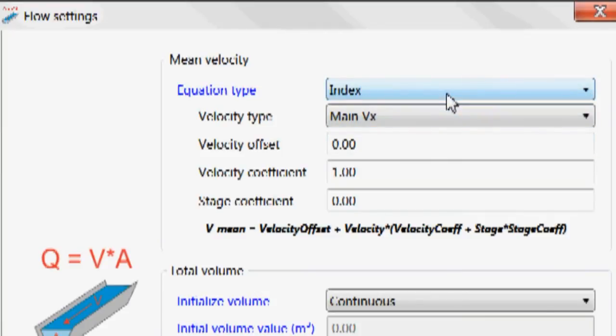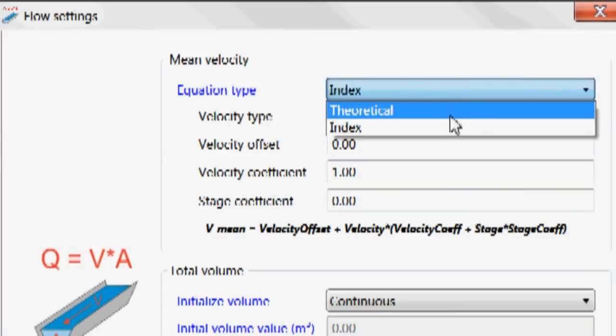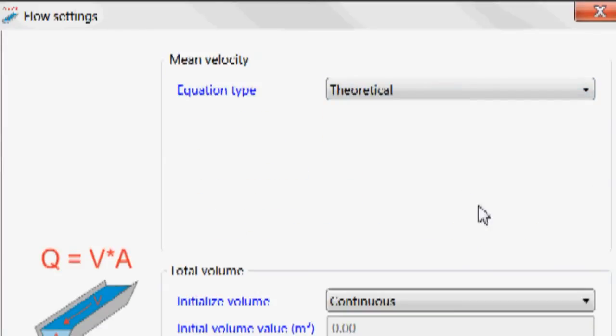If I want to provide my own equation to calculate flow, I can click index. I can select my velocity type and put in my velocity index equation. In most cases, especially in the irrigation canals, you're going to simply select theoretical and you'll be done.